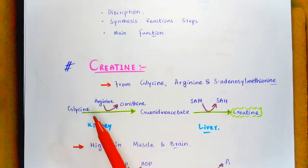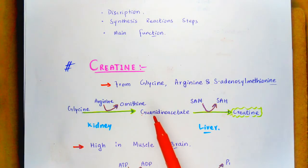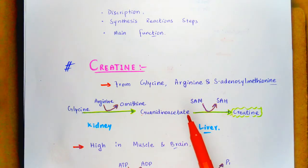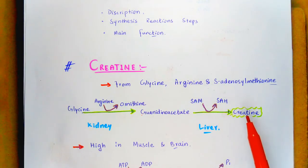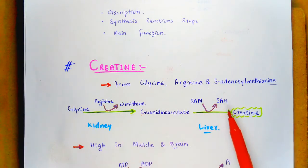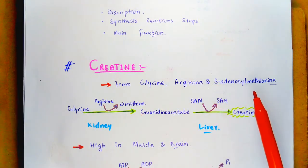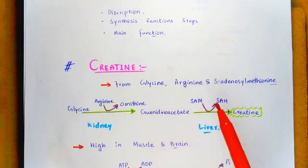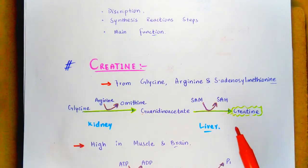Here is the reaction step by which creatine is formed. Glycine combines with arginine to form ornithine and guanidine acetoacetate. After this, the methylation reaction by S-adenosyl methionine gives the product creatine within the liver. Glycine, arginine, and S-adenosyl methionine are involved, and the reaction product is creatine, which is the special product derived from amino acids.